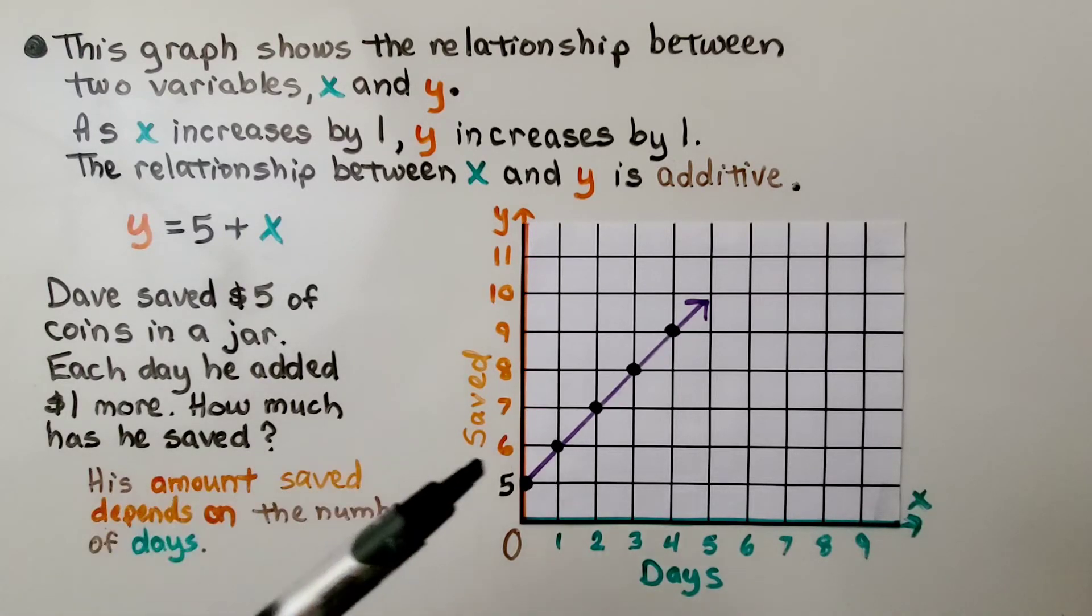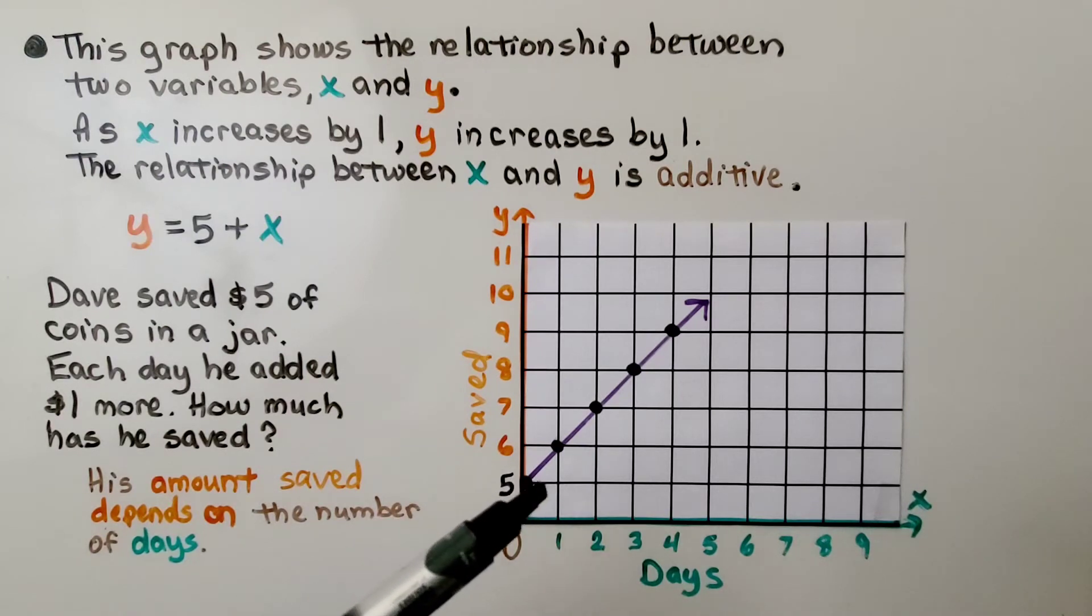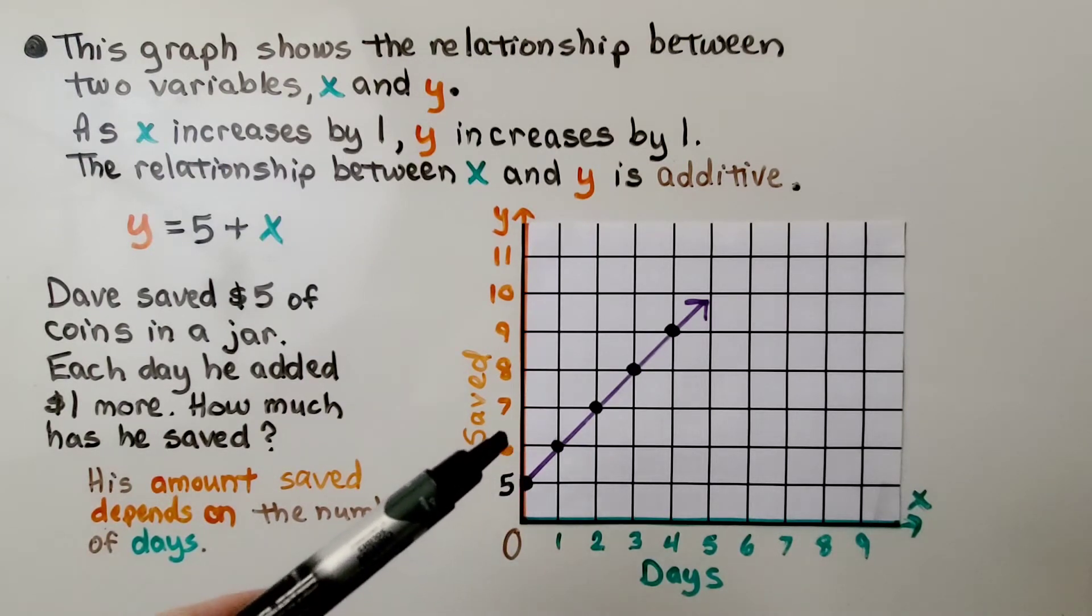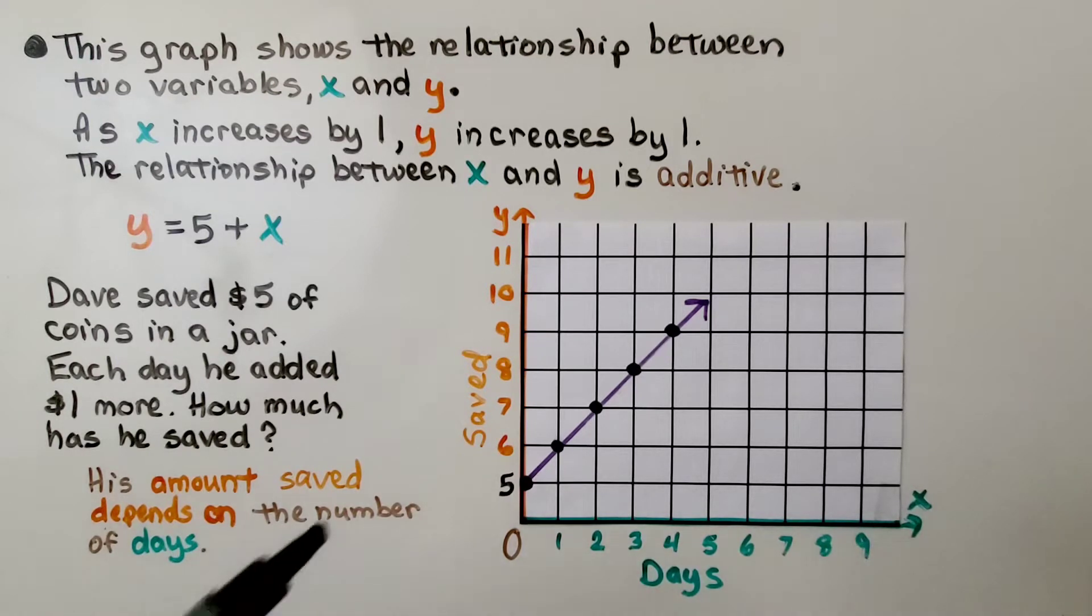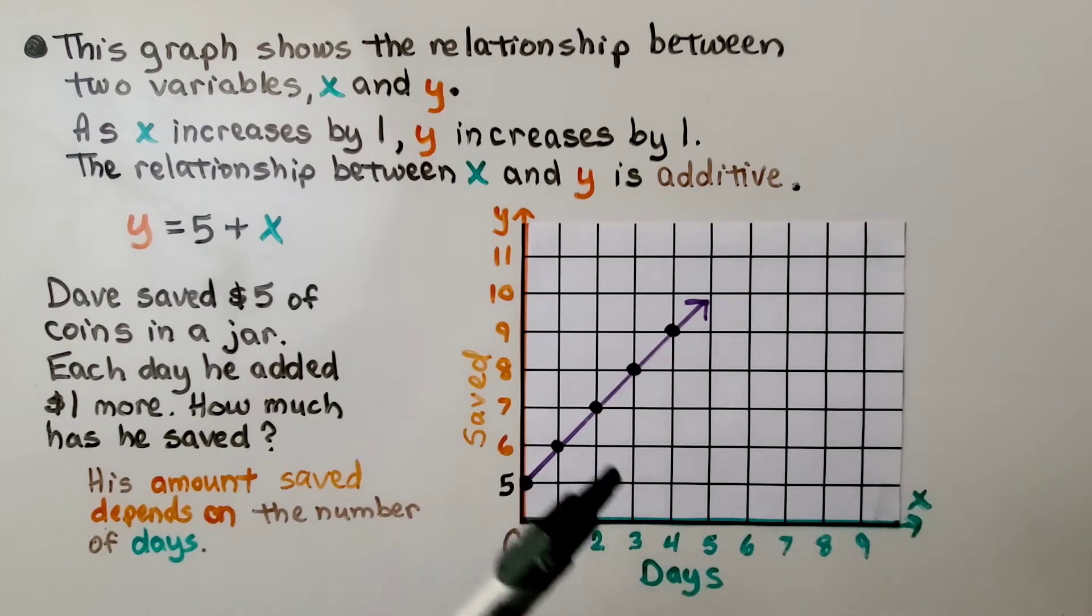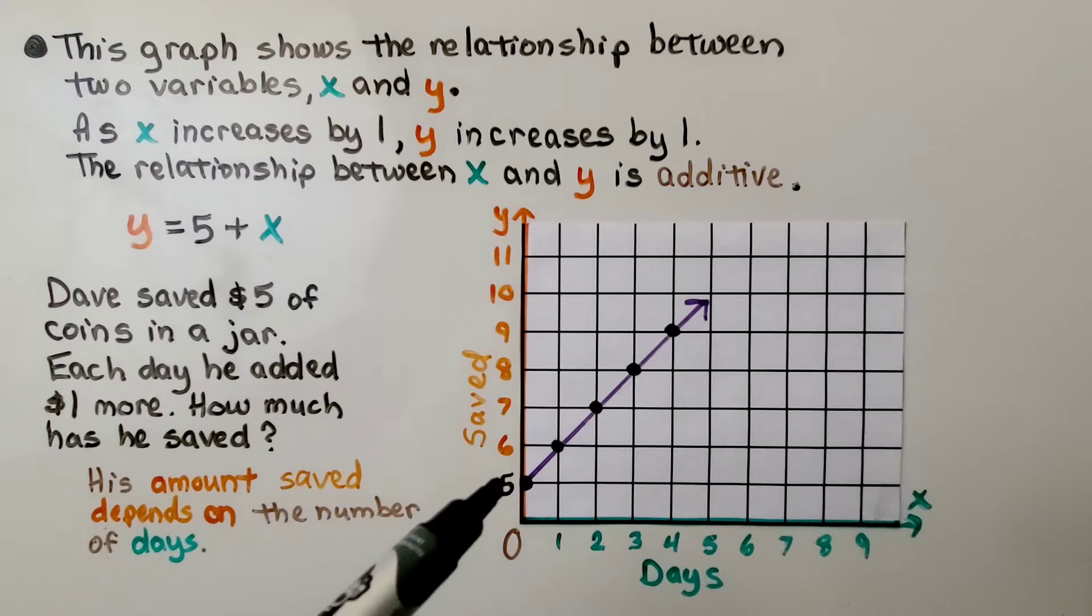Dave saved $5 of coins in a jar. Each day he added $1 more. How much has he saved? His amount saved depends on the number of days. He added $1 each day, so as each day went by, the amount he saved increased by 1.